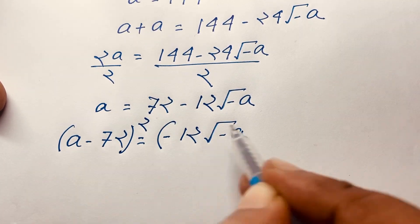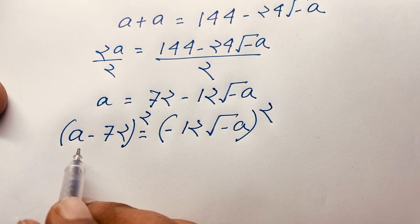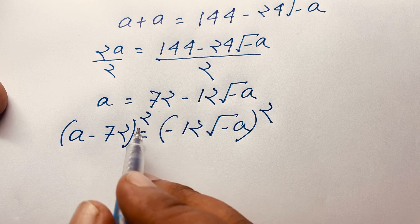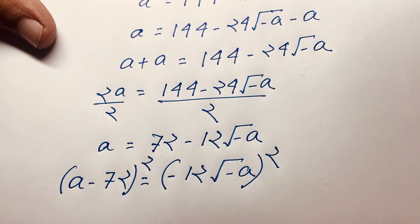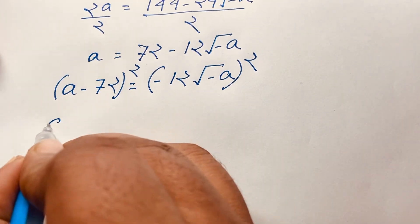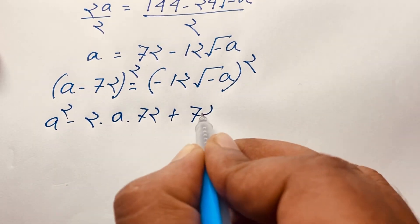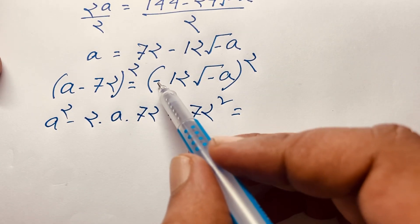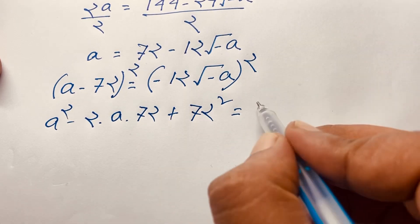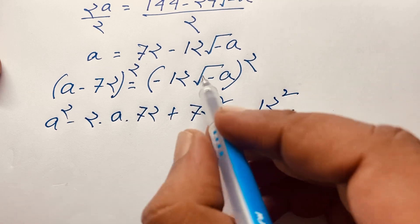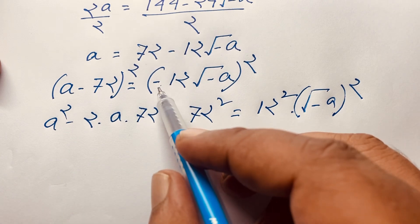I raise both sides to the power of 2. According to the math formula for (A minus B) whole squared, it equals A squared minus 2AB plus B squared. According to this identity, I consider this expression: it will be A squared minus 2 times A times 72 plus 72 squared, is equal to... Here the negative raised to an even power becomes positive, and 12 to the power 2 with square root negative A whole squared.